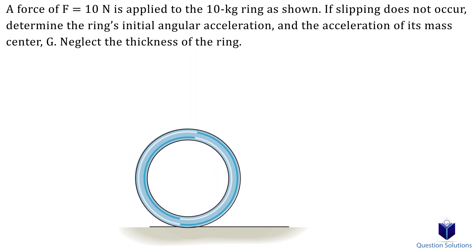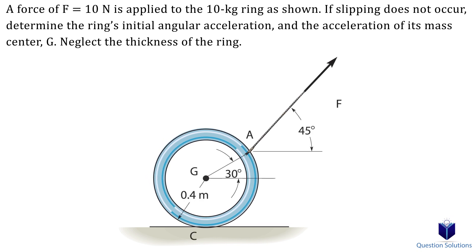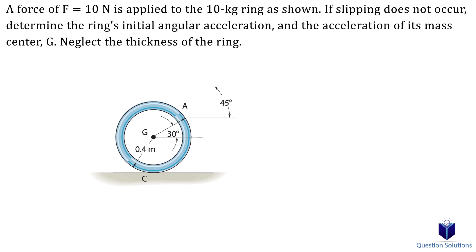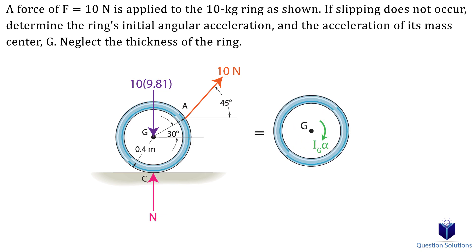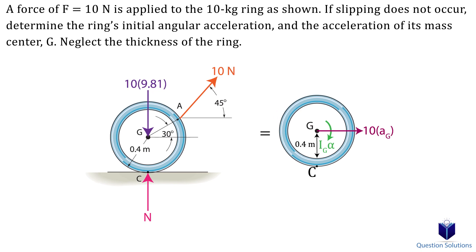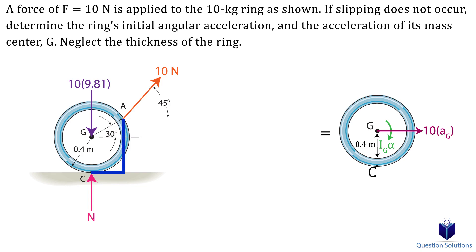Let's look at the next question. We have a ring being pulled and we need to find the initial angular acceleration and the acceleration of its center of mass. We draw the free body diagram — showing weight, normal force, and force F — and the kinetic diagram, which shows the moment about the center of mass and mass times acceleration pointing to the right. The easiest way to solve this is to write a moment equation about point C, which lets us ignore the normal force and weight since both pass through the line of action. We need to find the perpendicular distances from point A to C.